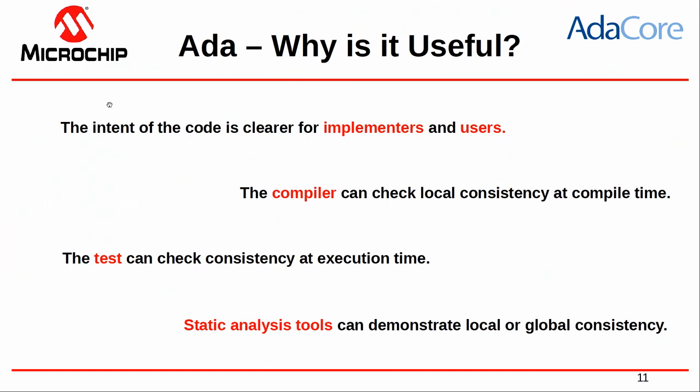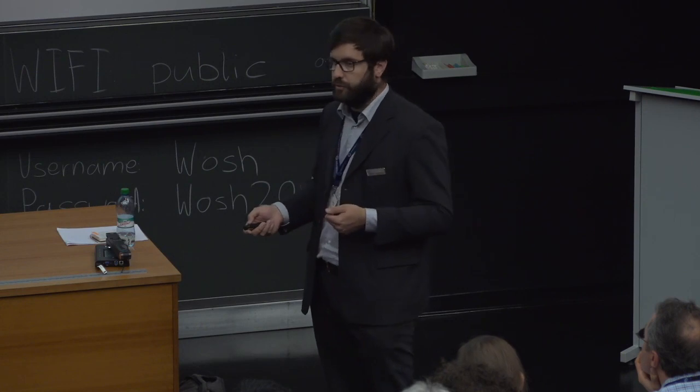The specification power means you communicate what you want to different actors in the software development process. You communicate better with other programmers who will maintain the code in a week, a month, or 20 years. You communicate better with the compiler, which can perform optimizations and select the right hardware representation for your types. You can also use these specifications during your testing campaign, and all that specification information is useful for static analysis and formal verification, enabling a better and more accurate analysis of your application.